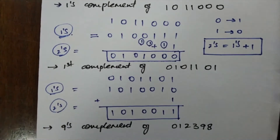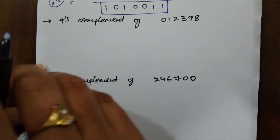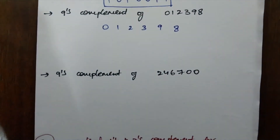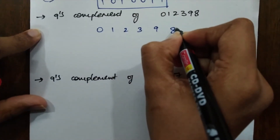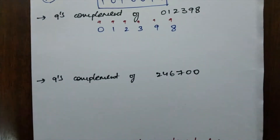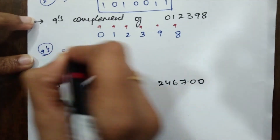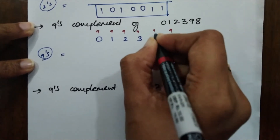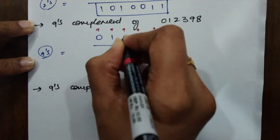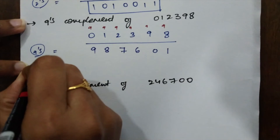Now for 9's complement and 10's complement: for 9's complement, you subtract each individual digit from 9. For the number 893210: write 9 above each digit, then subtract. 9−8=1, 9−9=0, 9−3=6, 9−2=7, 9−1=8, 9−0=9. The 9's complement is 106789.